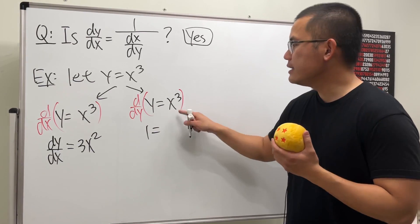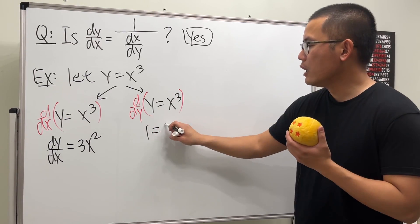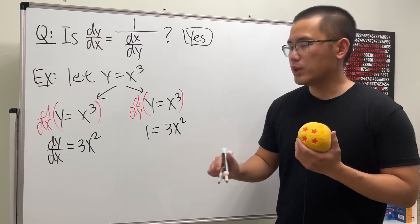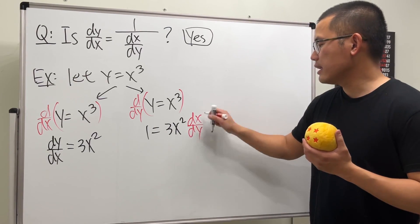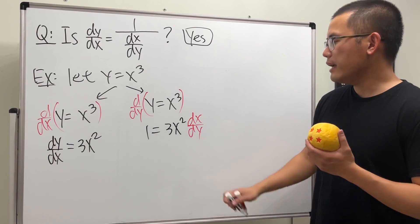On the right hand side, the derivative of x to the third power with respect to y, we get 3x squared, but we multiply by dx/dy because x is a function of y.